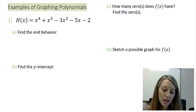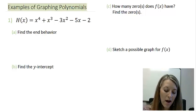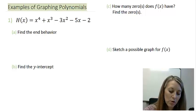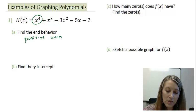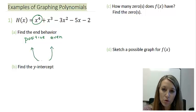Okay, part A, I need to find the end behavior of the graph. We know the end behavior comes from my leading term, which is x to the fourth. This leading term was a positive even. So that means since it's even, both ends of my graph match. Since it's positive, that means both ends of my graph are going up in both directions.